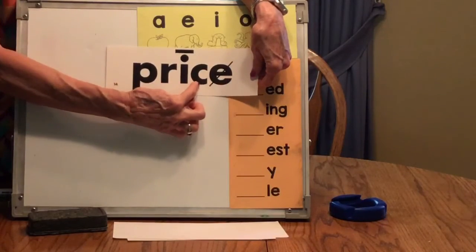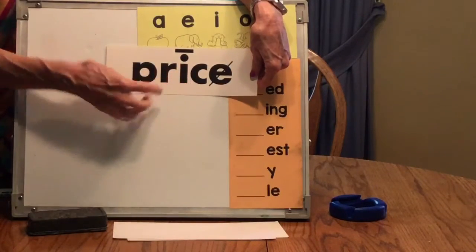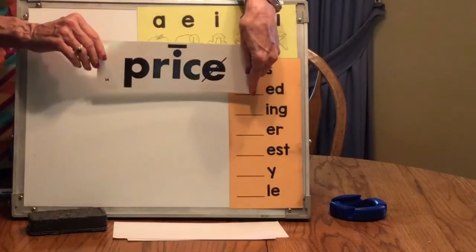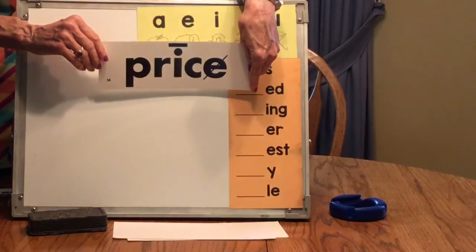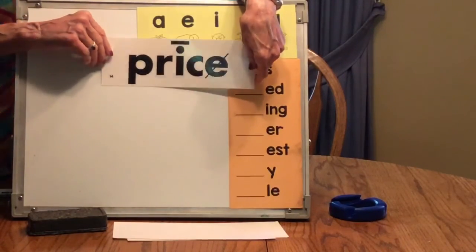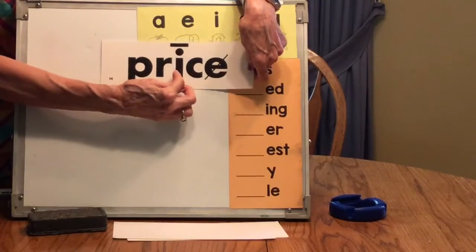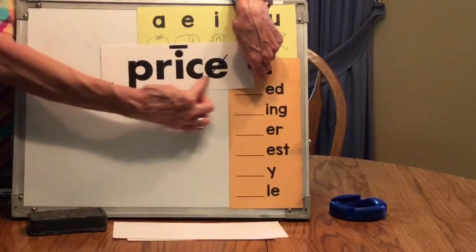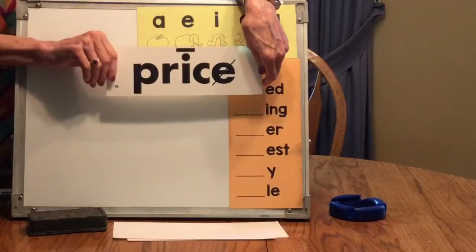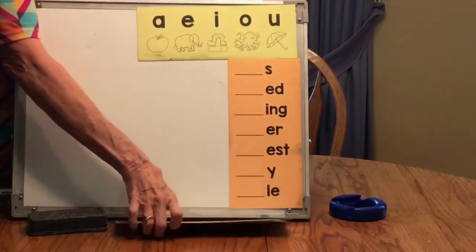Oh, there's C-E, so it's going to make the S sound. With the silent E, it does the same. The first vowel speaks, he says his name. The vowel says I, and the word is price. The vowel says I, and the word is price.